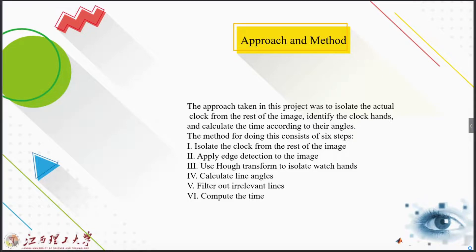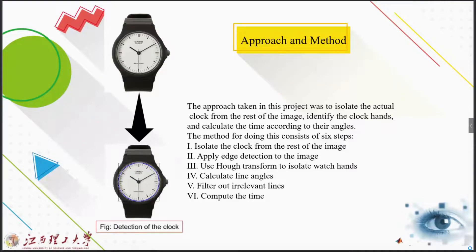The method of doing this consists of six specific steps: isolating the clock from the rest of the image, apply edge detection to the image, use the Hough transformation to isolate the watch hands, calculate the line angles, filter out the irrelevant image, and compute the time.